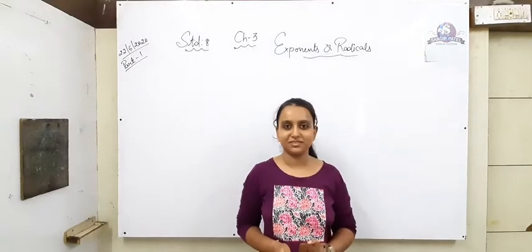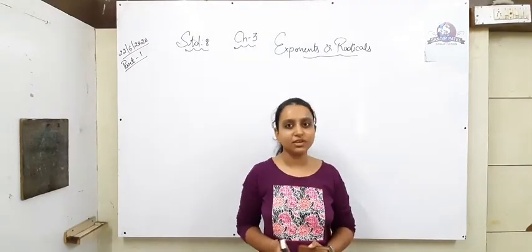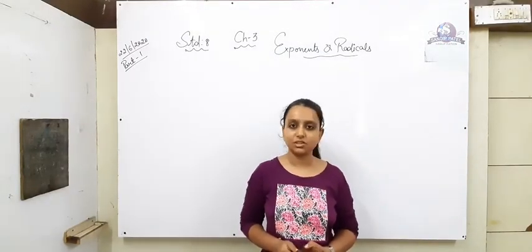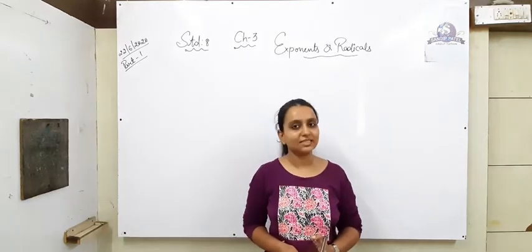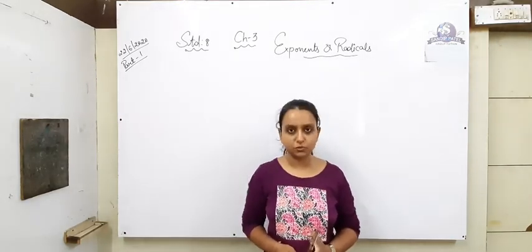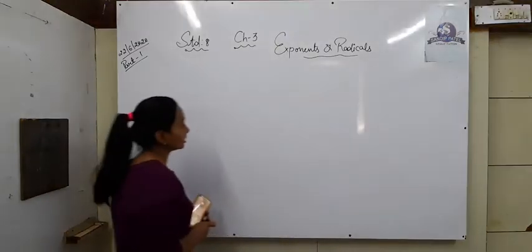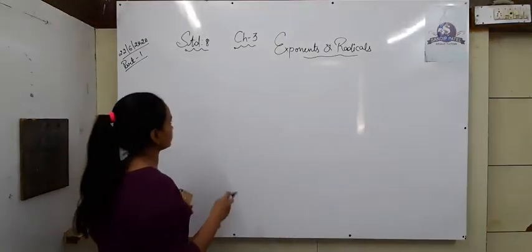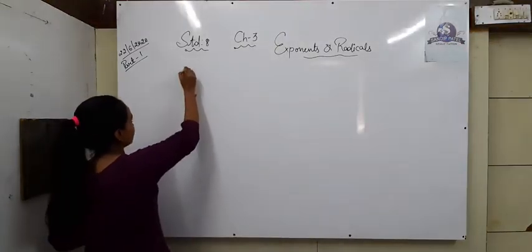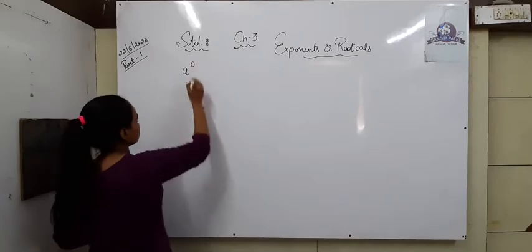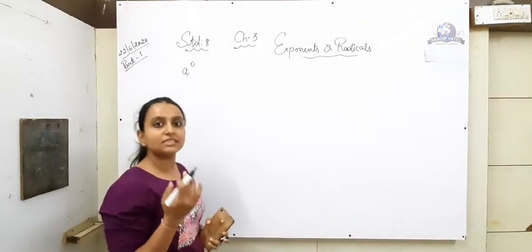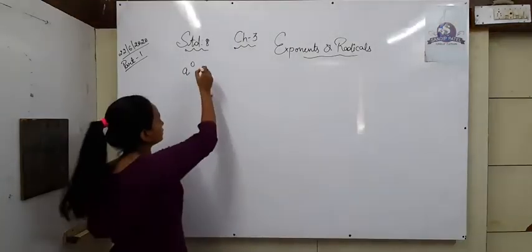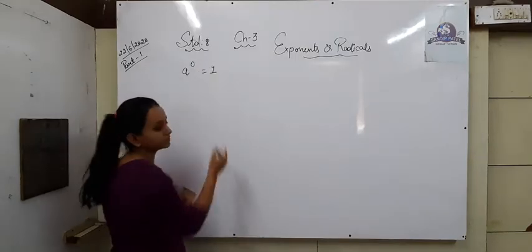Good morning everyone. Myself Imam and today we will start Chapter number 3, Exponents and Radicals. First of all let's revise the laws of exponents. In the laws of exponents, the first is A raised to 0 — a number where the power is 0. Then the value of that number will be 1.